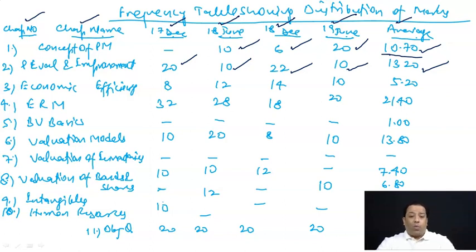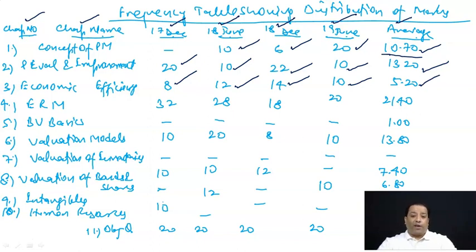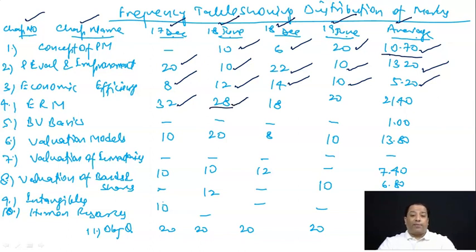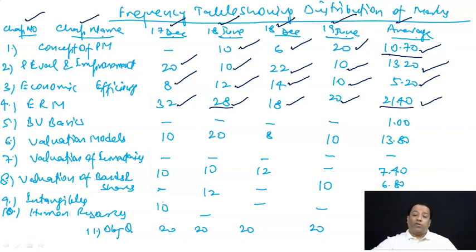Third chapter — economic efficiency: 17 December में 8 marks, 18 June में 12 marks, 18 December में 14 marks, 19 June में 10 marks — average 5.20 marks। Enterprise risk management: 17 December में 32 marks, 18 June में 28 marks, 18 December में 18 marks, 19 June में 20 marks — and on an average 20.10 marks। यह chapter बहुत ज़्यादा relevant है।